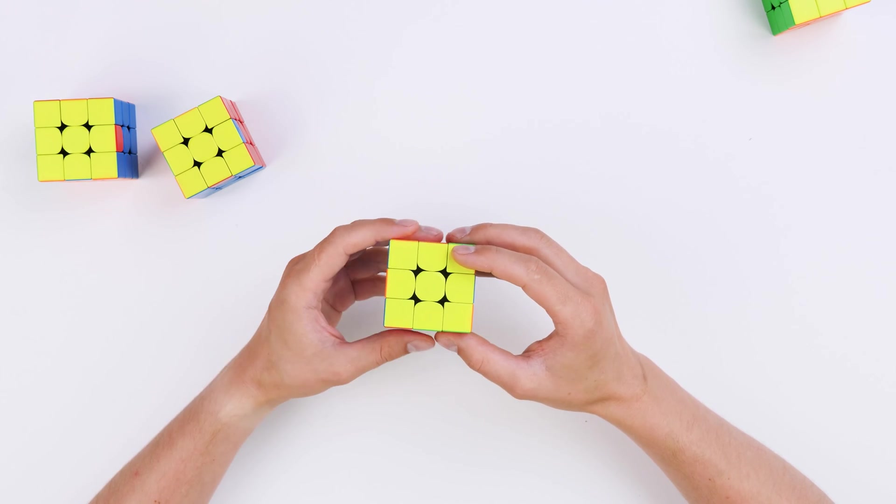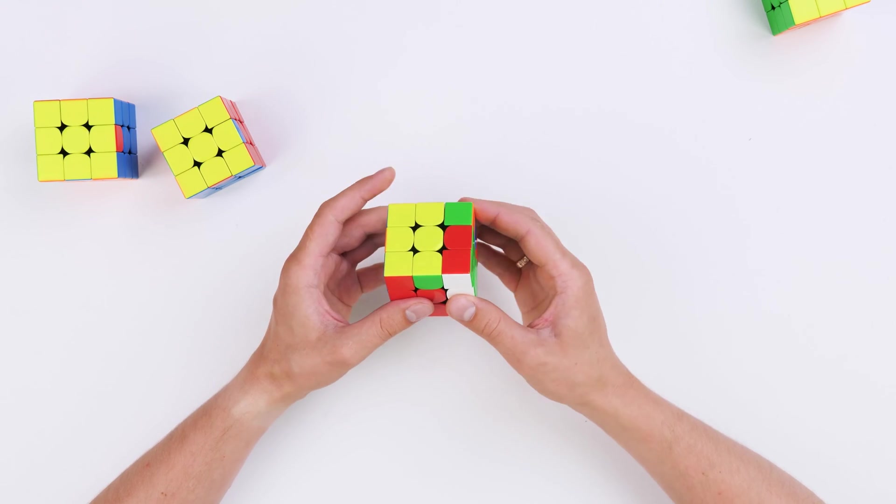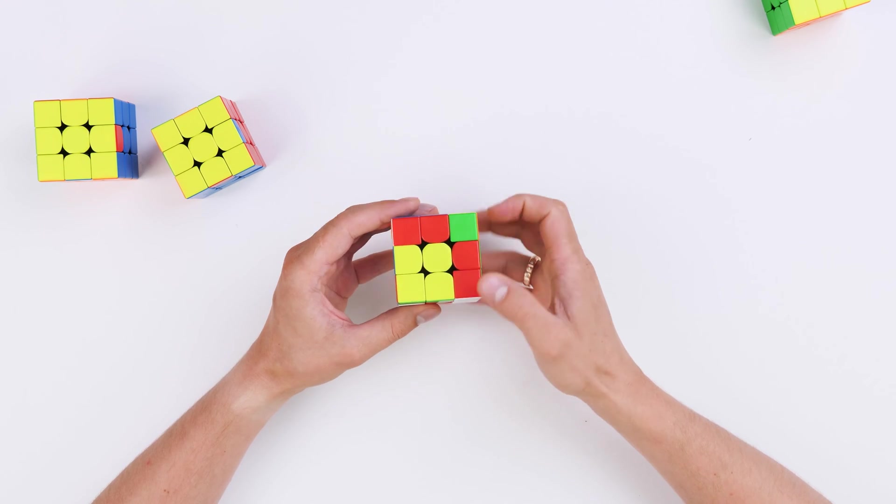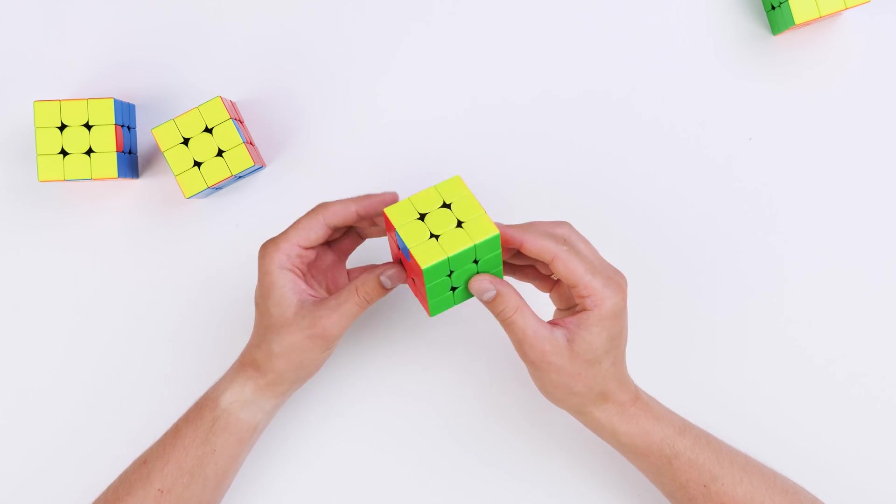So, in the second case, we have to do J-perm twice. Do J-perm a second time. And we have all the corners standing in the places.